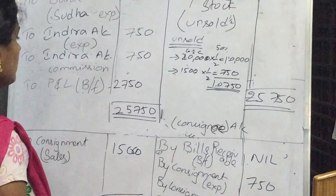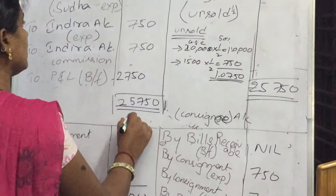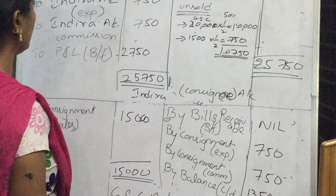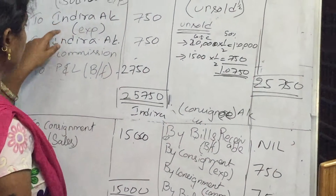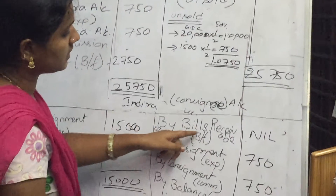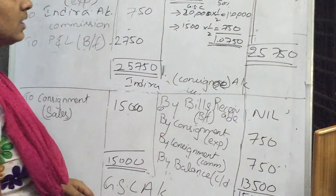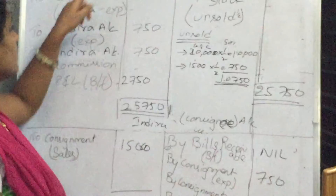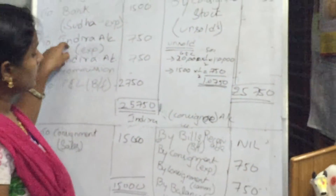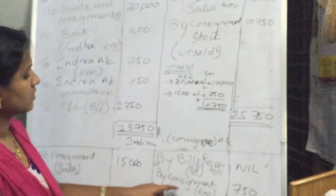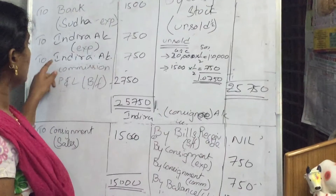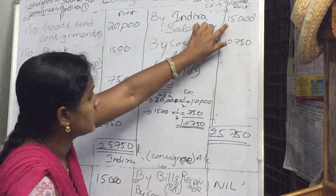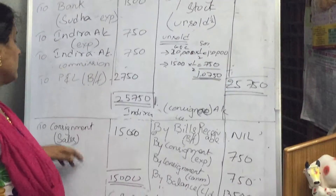Next is the Indra account. In the Indra account, bills receivable is nil because no advance was given in the problem. Indra's expenses of 750 are transferred from the consignment account debit side to credit side. From the consignment account: consignment expenses 750. Next, consignment commission 750. For sales, which go on the credit side, you transfer to the debit side from the consignment account.